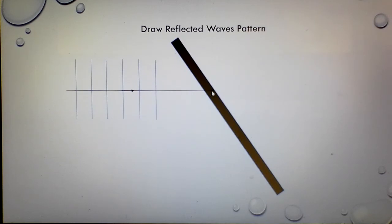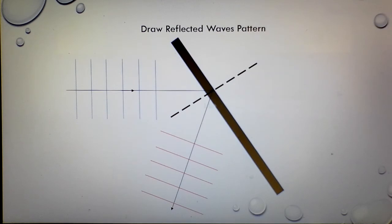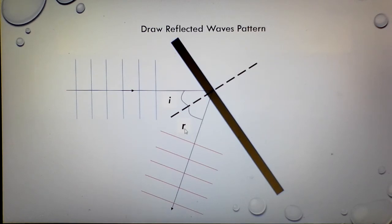The incident wave strikes the reflector at a point. At that point, we draw a normal line, which is 90 degrees to the reflector. The wave bounces back — this is the reflected wave. Draw a few lines to represent the wave front for the reflected wave. The angle between the incident wave and the normal line is marked as I, known as the angle of incidence. The angle between the normal and the reflected wave is marked as R, the angle of reflection. Based on the law of reflection: angle I equals angle R.